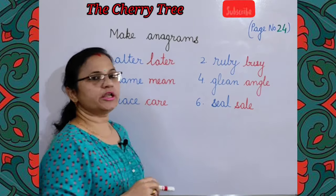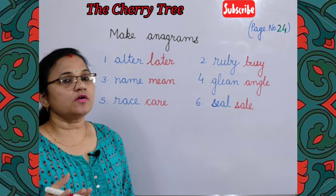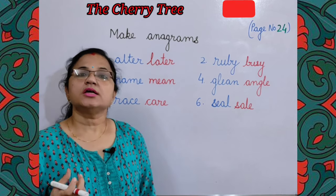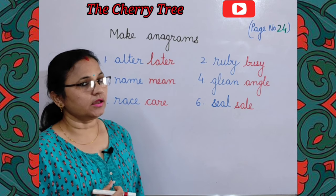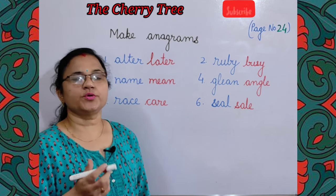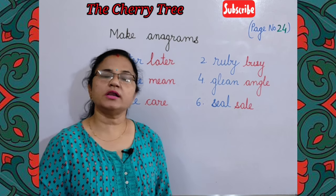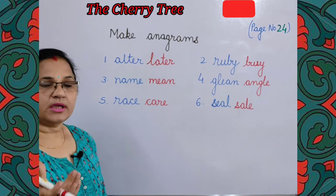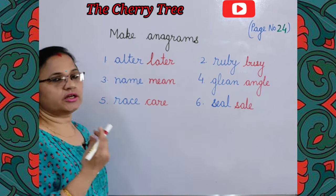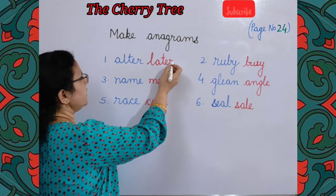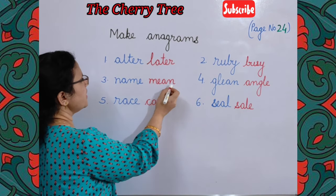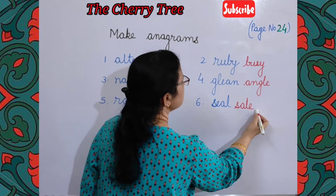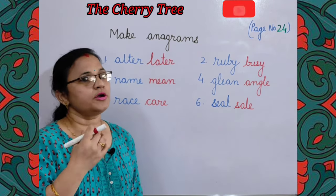Next exercise on page number 24: make anagrams. An anagram is when you re-arrange the letters of a given word to make a new word. For example, 'alter' becomes 'later'. You can also make: meal from 'name'; care/race from 'race'; busy from 'ruby'; angle/glean from 'glean'; sale/seal from 'seal'. You can make more than one word. To understand anagrams in detail, you can watch the complete video on my channel.